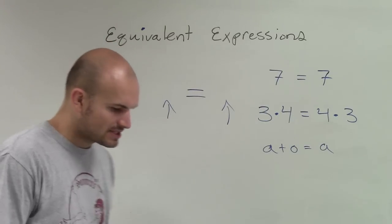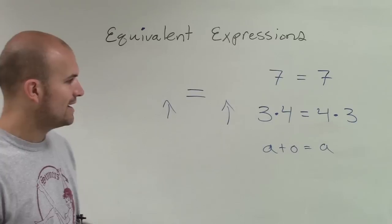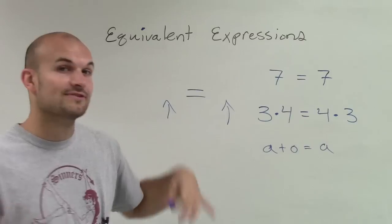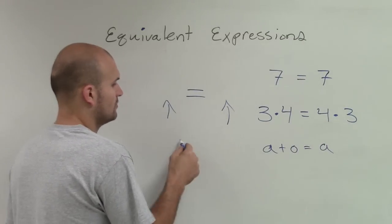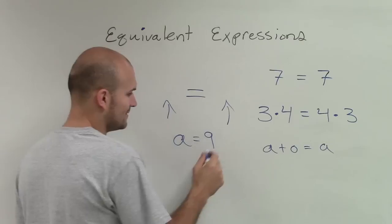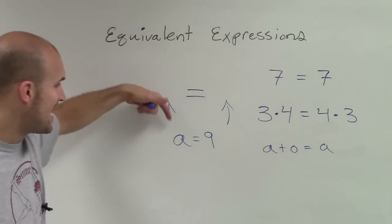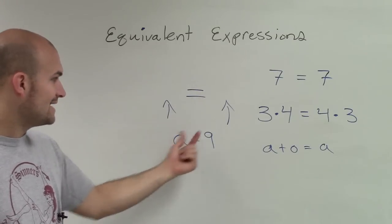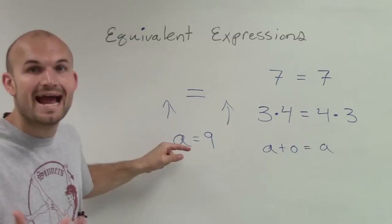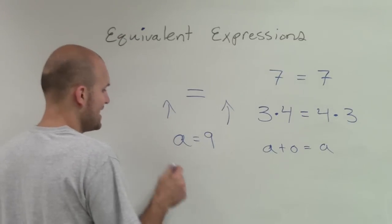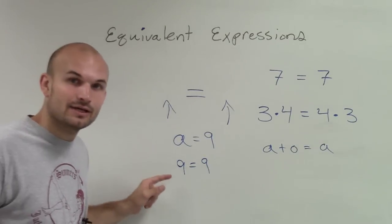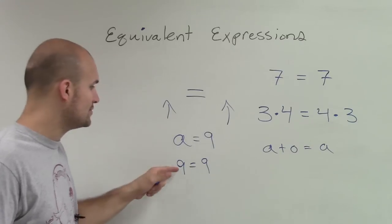A lot of times when we're talking about equivalent expressions, it's just a way to say that the left side is equal to the right side. And they don't always have to look alike. So one thing we'll look at when we start looking into equations — we could say that a equals 9. This is an equivalent expression, meaning the value of a is equal to 9. So this side equals this side. If this side equals this side, then the value of a has to be 9. Therefore, we can say a is equal to 9, or the same value as 9.